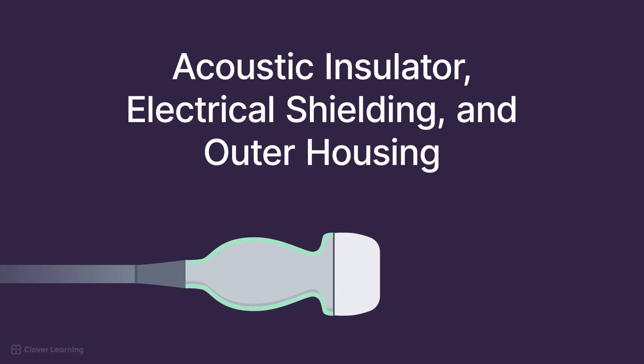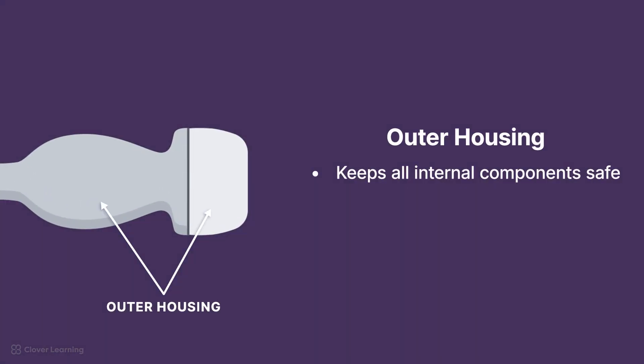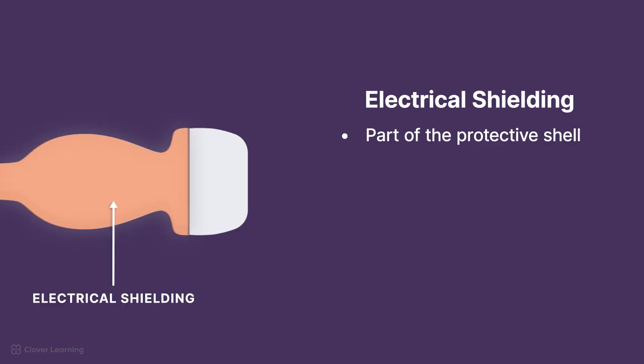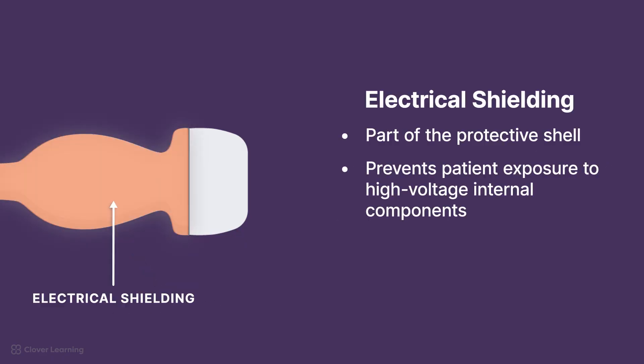The final components of all transducers encase its inner components and are the acoustic insulator, the electrical shielding, and protective outer housing. The outer housing keeps all the internal components safe from wear, tear, and contamination, ensuring the transducer performs at its best and provides a smooth, safe surface for patient contact. Part of the protective shell is the electrical shielding, which prevents patient exposure to high-voltage internal components and reduces outside electrical interference.